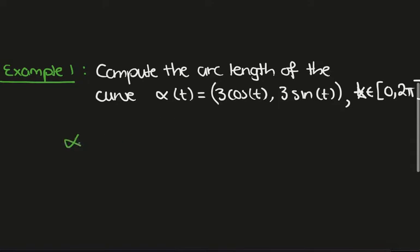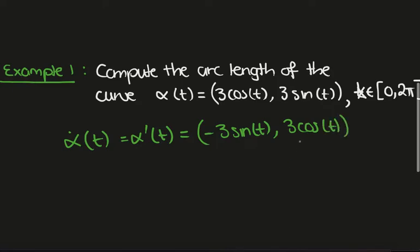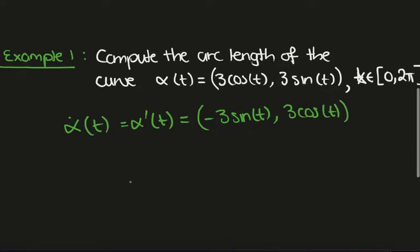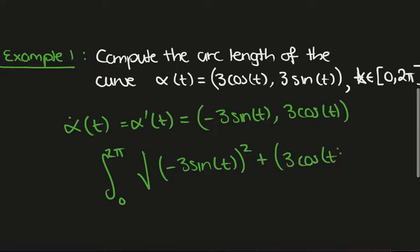So what we have here is we need to calculate the derivative, so α'(t). You can also write this as α'(t), and this will be (-3sin(t), 3cos(t)). And now we just take the integral from 0 to 2π of the square root of (-3cos(t))² plus (3cos(t))² dt.